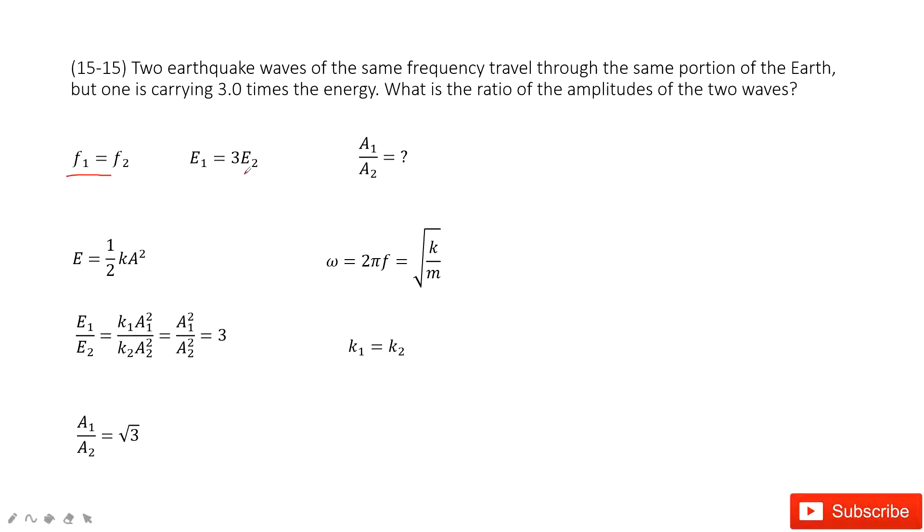Now question 1. How can we find the energy for the wave? 1.5 kA squared. A is the amplitude, k is the constant, spring constant.